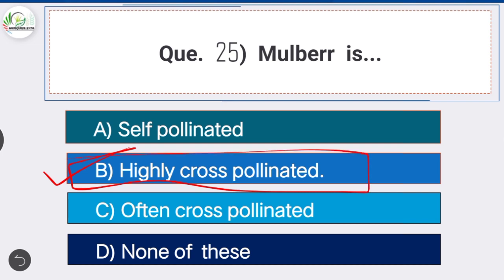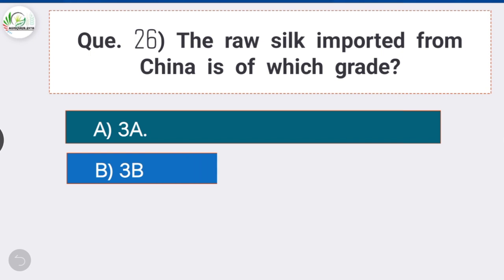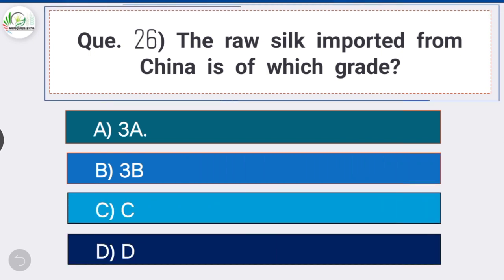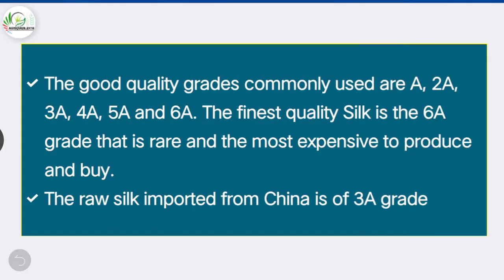Question number twenty-six: the raw silk imported from China is of which grade? Option A is the correct answer — 3A. The good quality grades commonly used are A, 2A, 3A, 4A, 5A and 6A; the finest quality silk is 6A grade, which is rare and most expensive. The raw silk imported from China is of 3A grade.